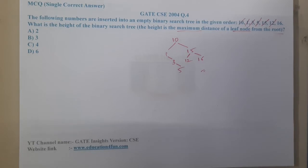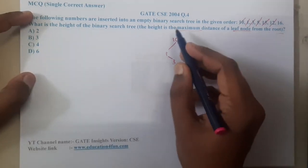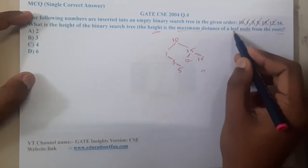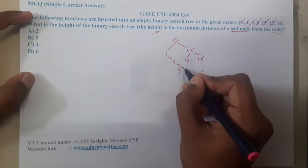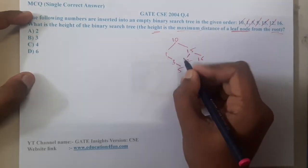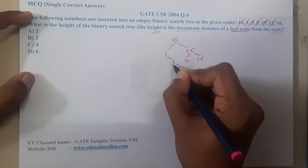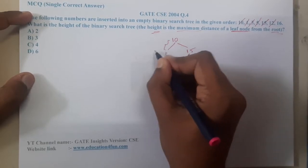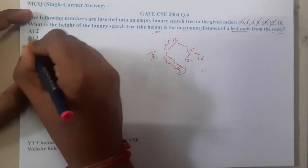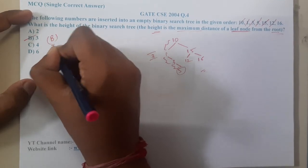What is the height we need to know? What he told is the height definition: it is the leaf to the root. What is the longest distance? It is here, right? This distance is 1, this distance is 2, this distance is 3. So the maximum height will be 3. B will be the answer.